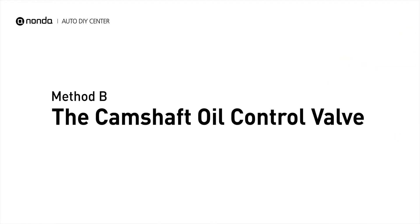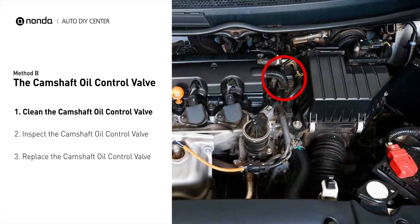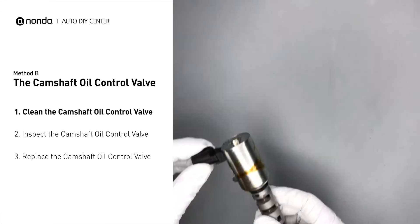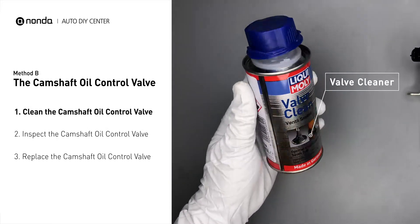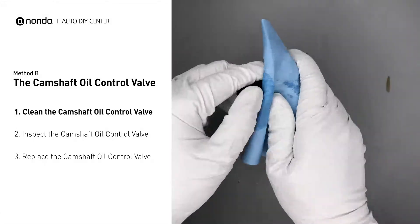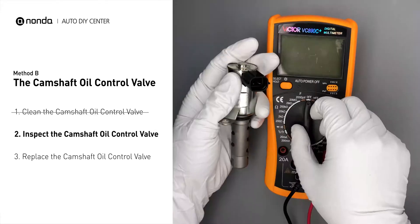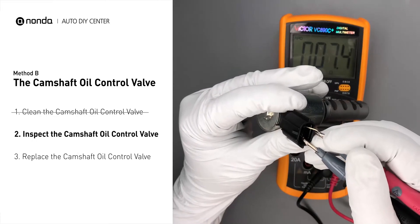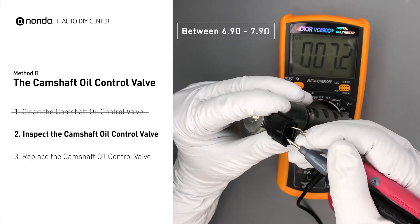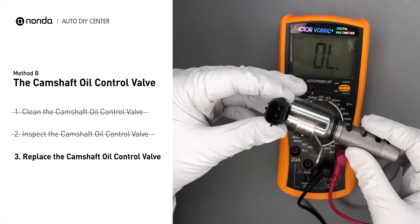Method B: the camshaft oil control valve. The camshaft oil control valves are usually located in cars that have engines with variable valve timing systems. First, carefully remove the camshaft oil control valve from the engine. Use a valve cleaner to clean the camshaft oil control valve. Then use a multimeter to perform a test on the valve. At an ambient temperature of 68 degrees Fahrenheit, the valve resistance should be between 6.9 ohms and 7.9 ohms. If you do not get a reading, this indicates that the camshaft oil control valve is faulty and needs to be replaced.